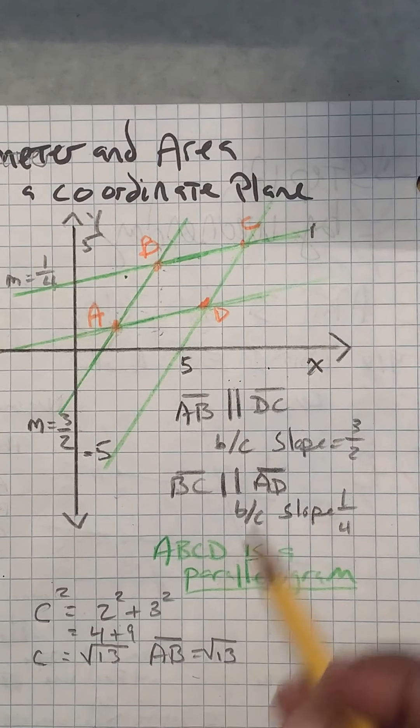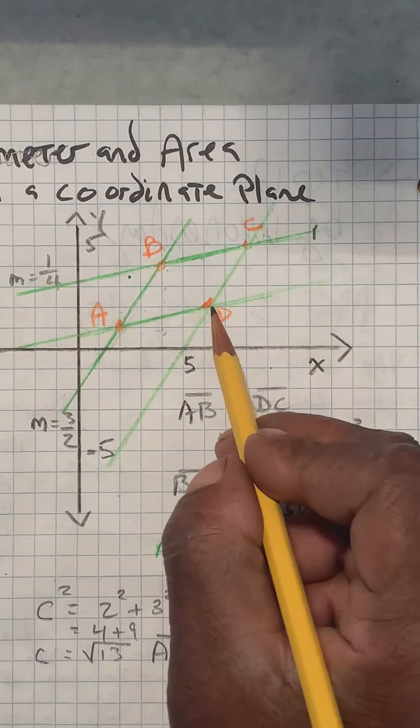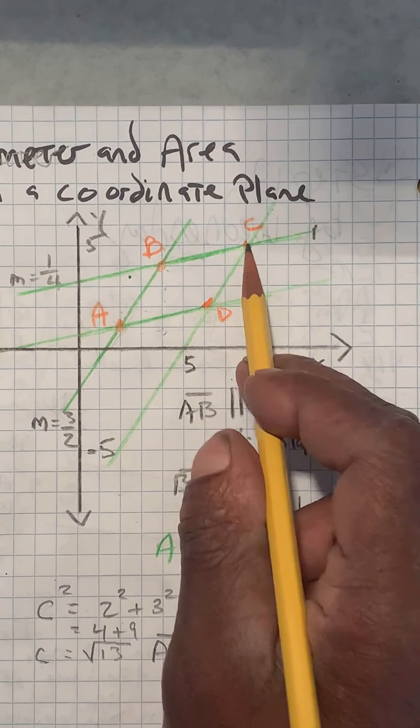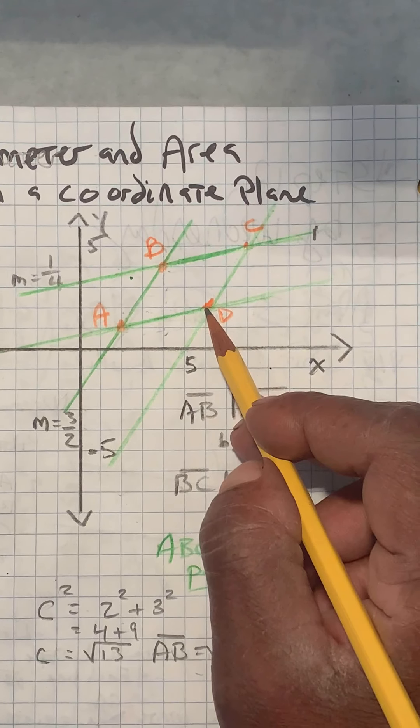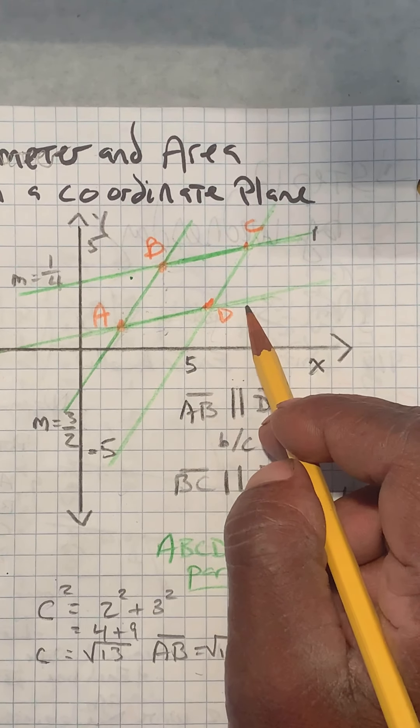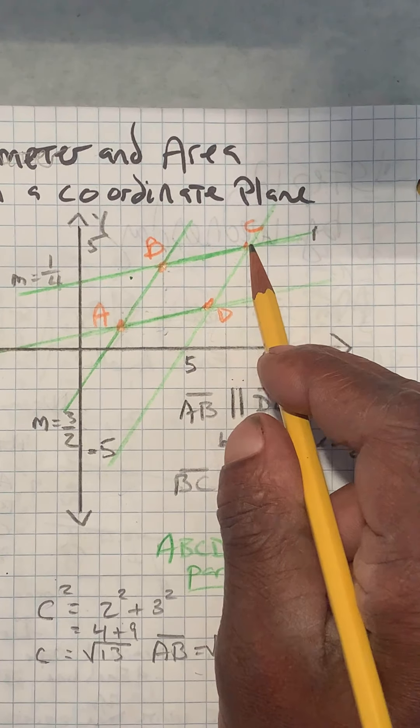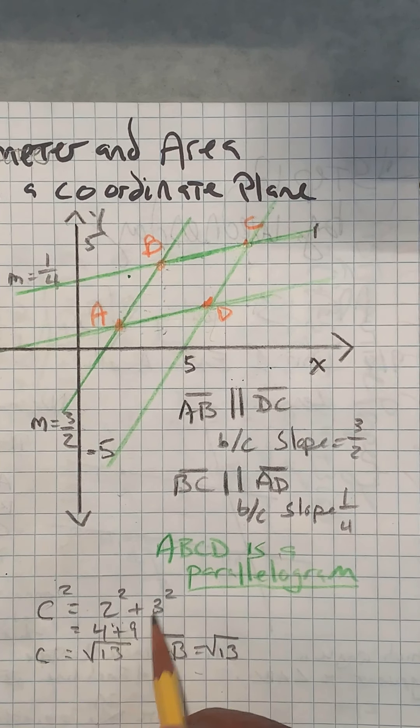And we'll do the same kind of calculation. Well, let's see if DC is the same. Because if it's the same, then we're on our way to proving that this is indeed a parallelogram. And we can then start to find our perimeter. Let's see. This is also a change of 2 in that direction and a change of 3 in that direction.